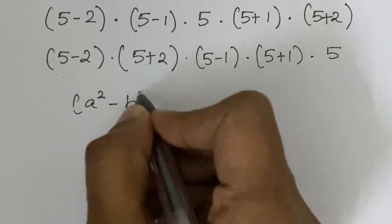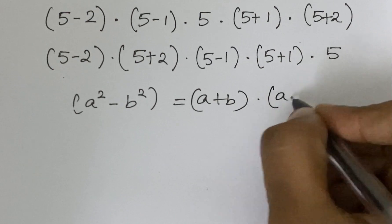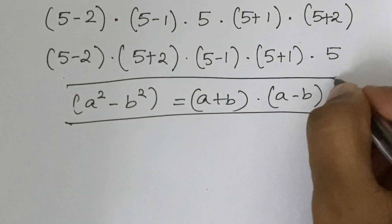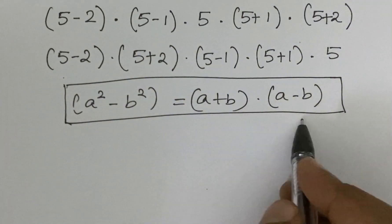We have a square minus b square equals a plus b times a minus b. I am writing this formula just for your understanding purpose. If you are solving similar problems, you ignore these steps.